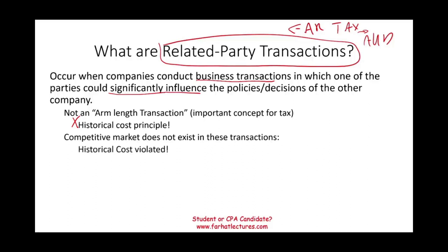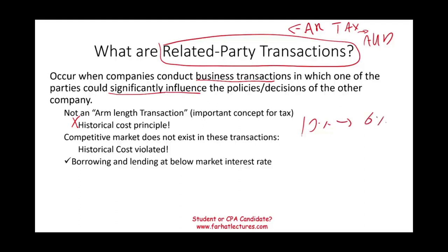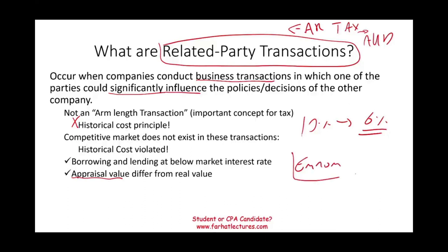Related party transactions violate the historical cost principle. Some examples include borrowing and lending at below the ongoing market interest rate — if I should pay 10% but you charge me 6%, that's not an arm-length transaction. Another example is when something is appraised differently than its real value. A case in point is Enron: Enron used to buy investments, and some of those investments were not good investments.